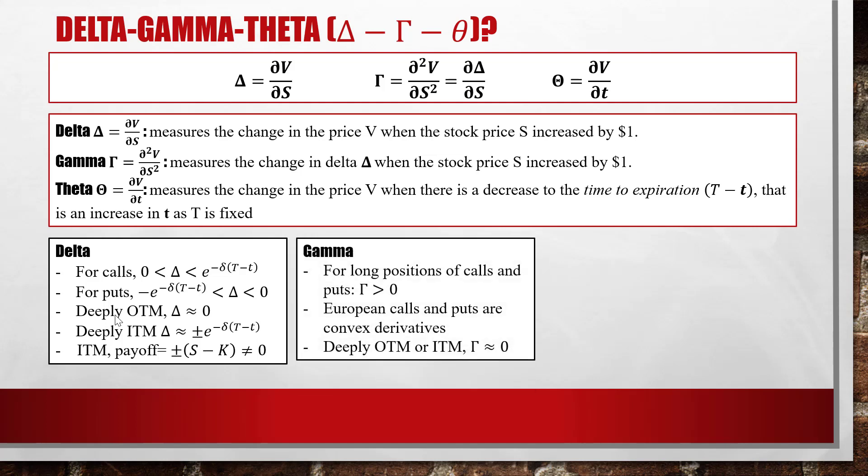For Gamma: for a long position of calls and puts, Gamma should be positive because V is positive and the second derivative is positive — European calls and puts are convex derivatives because Gamma is the second derivative of V, and when Gamma is positive V is a convex function. If the derivative is either deeply OTM or ITM, then Gamma should be zero.